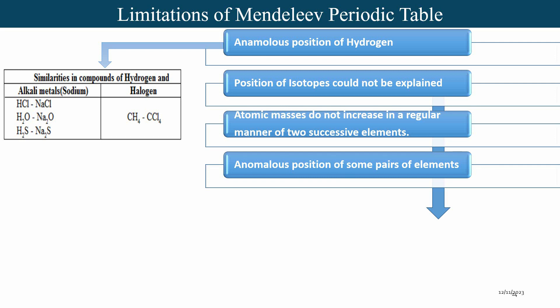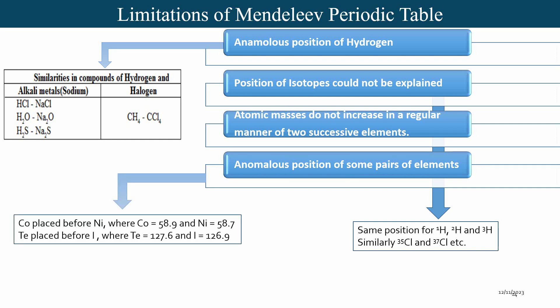Second, the position of isotopes could not be explained in Mendeleev's periodic table; he placed all isotopes of an element in the same box. For example, protium, deuterium, and tritium — having different atomic weights — were given the same position. Similarly, chlorine-35 and chlorine-37 were placed at the same position. In some cases, atomic masses in Mendeleev's table do not increase regularly between two successive elements. For example, cobalt was placed before nickel, while the mass of cobalt is greater than that of nickel. Similarly, tellurium was placed before iodine, whereas the mass of tellurium is greater than that of iodine.